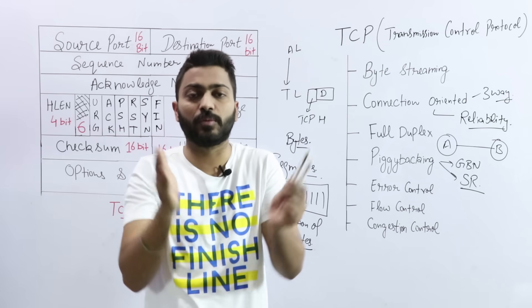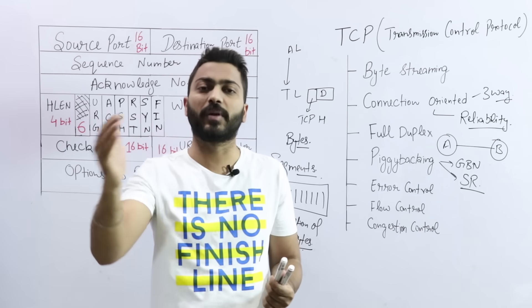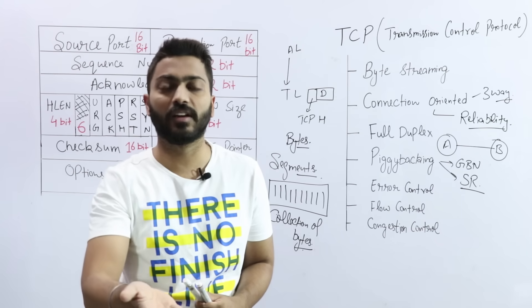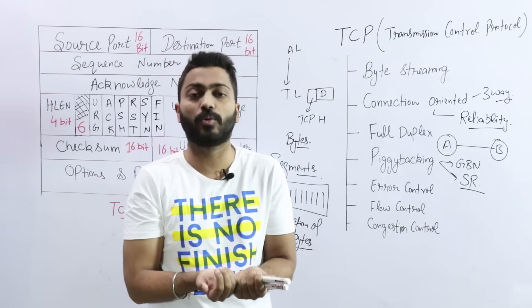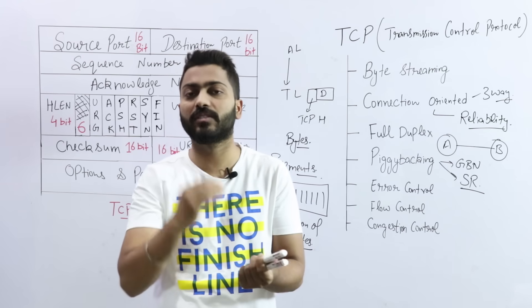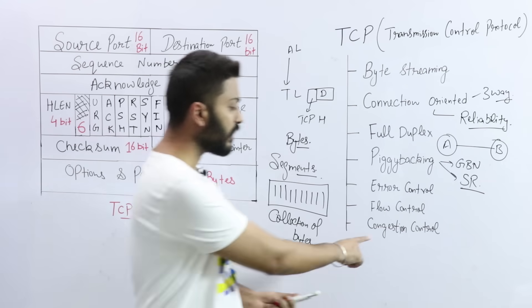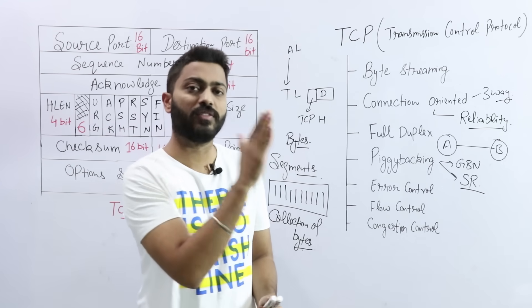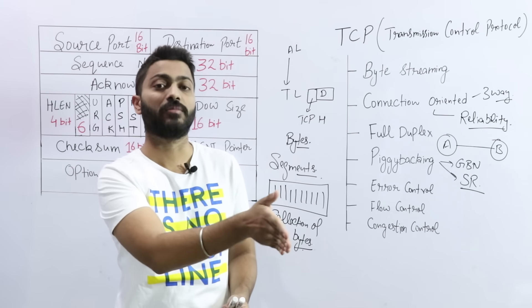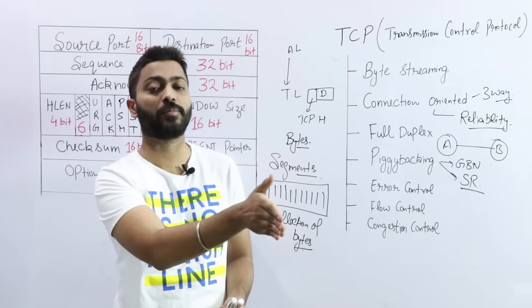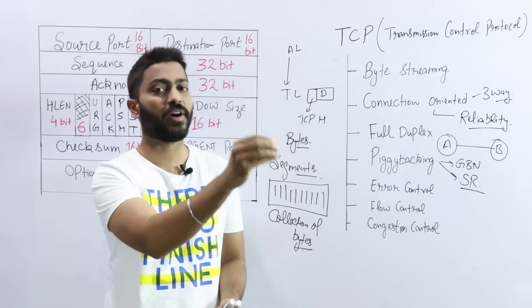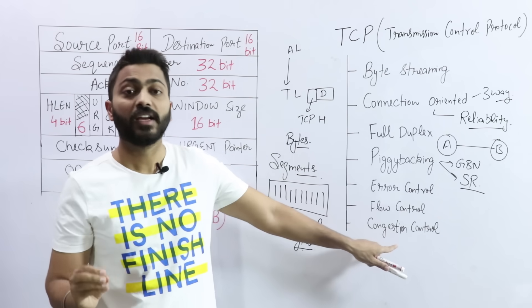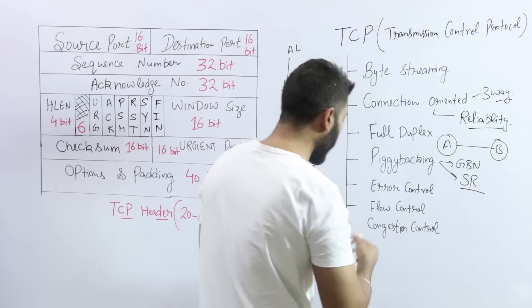Flow control. Flow control means whenever we send the data to the receiver, we have to maintain some flow control. Otherwise the receiver will be overwhelmed with data. If I am sending data to receiver, the receiver, whatever buffer it has, whatever its receive capacity is, I should send data less than or equal to that capacity. If I send more data than that, the receiver won't be able to properly accept the data, so there can be some loss of the data.